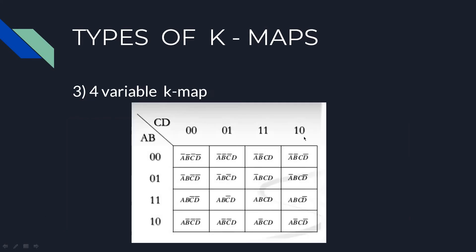This is the 4 variable K-map. As I told you, you can write this as C-bar D-bar, C-bar D, CD and CD-bar. You can write this as A-bar B-bar, A-bar B, AB and AB-bar.